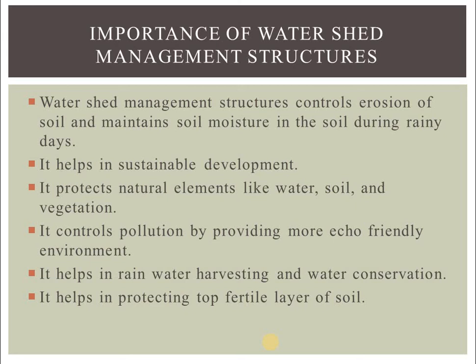Watershed management controls pollution by providing a more eco-friendly environment, and water pollution is avoided since structures like cement plugs and gabion walls reduce velocity of flow, store water on the upstream side, and do not allow it to get polluted into the river. It helps in rainwater harvesting and water conservation. It also helps in protecting the top fertile layer of soil. Watershed management structures should be constructed to avoid erosion of the fertile layer of soil.